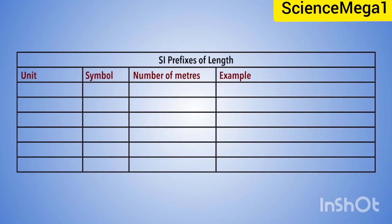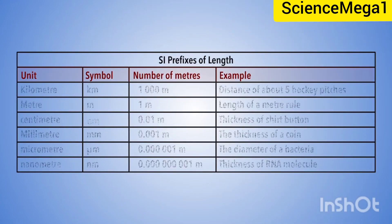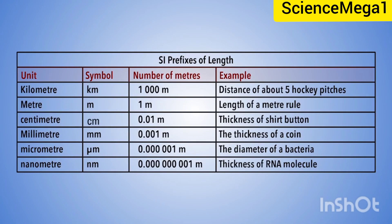The table shows some of the other units of length. There is a column for unit, a column for symbol, a column for number of meters, and an example. The first unit is kilometer, which has the symbol km. The number of meters is 1,000 meters. An example is the distance of about five hockey pitches.